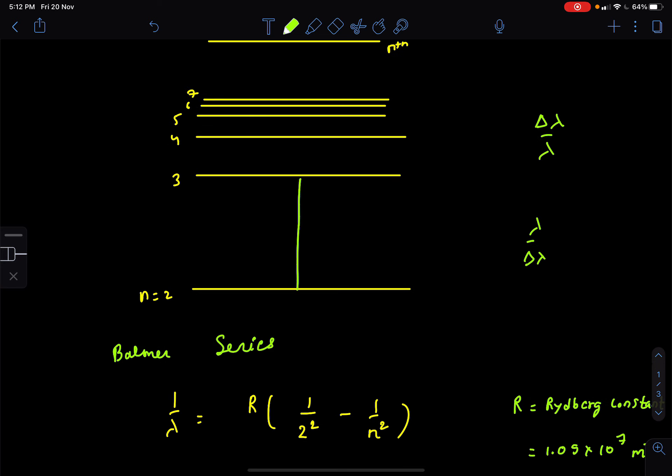So first line means 3 to 2, second line means 4 to 2, third line means 5 to 2. So each time n increases by 1, like 3 to 2, 4 to 2, 5 to 2, 6 to 2, 7 to 2, like that.